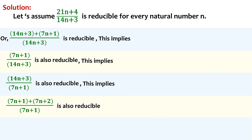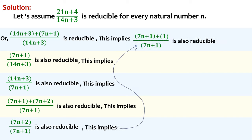Or, (7n + 1 + 7n + 2)/(7n + 1) is also reducible. This implies, (7n + 2)/(7n + 1) is also reducible.